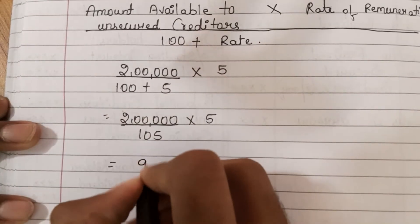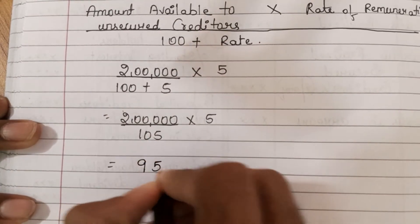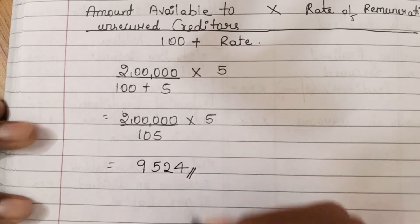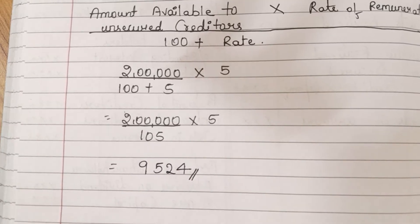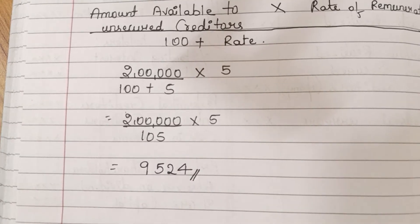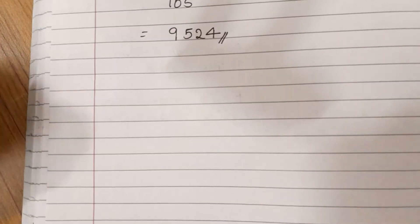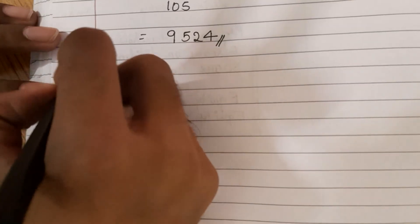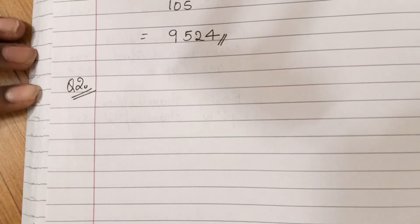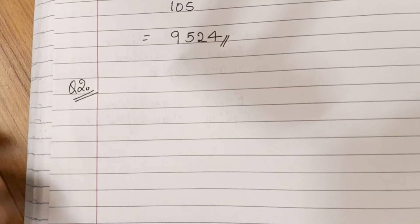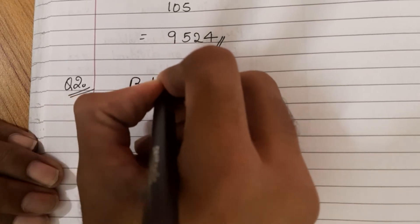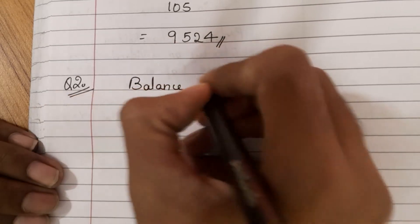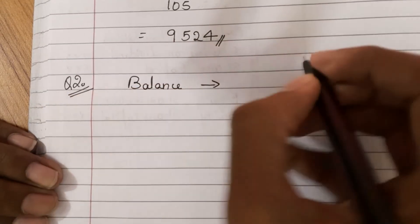This gives us rupees 9,524, which is the answer for question number one. Now let us solve question number two. In question number two, the balance of cash is given.